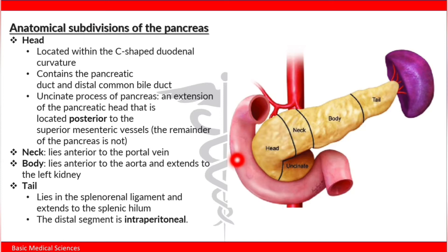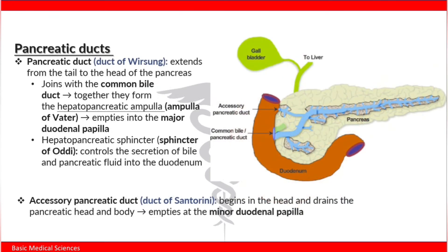The neck lies anterior to the portal vein. The body lies anterior to the aorta and extends to the left kidney. The tail lies in the splenorenal ligament and extends to the splenic hilum.